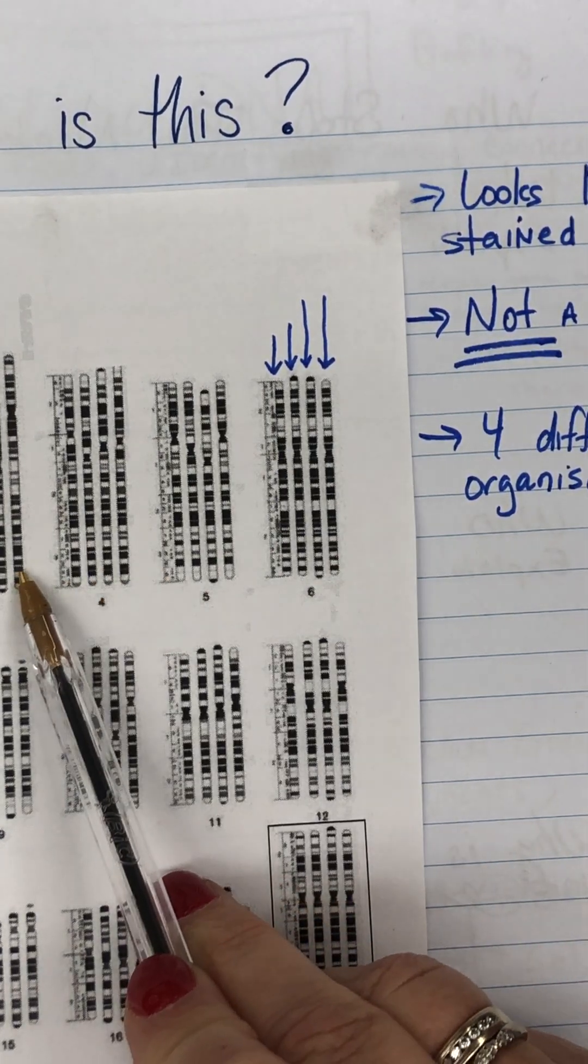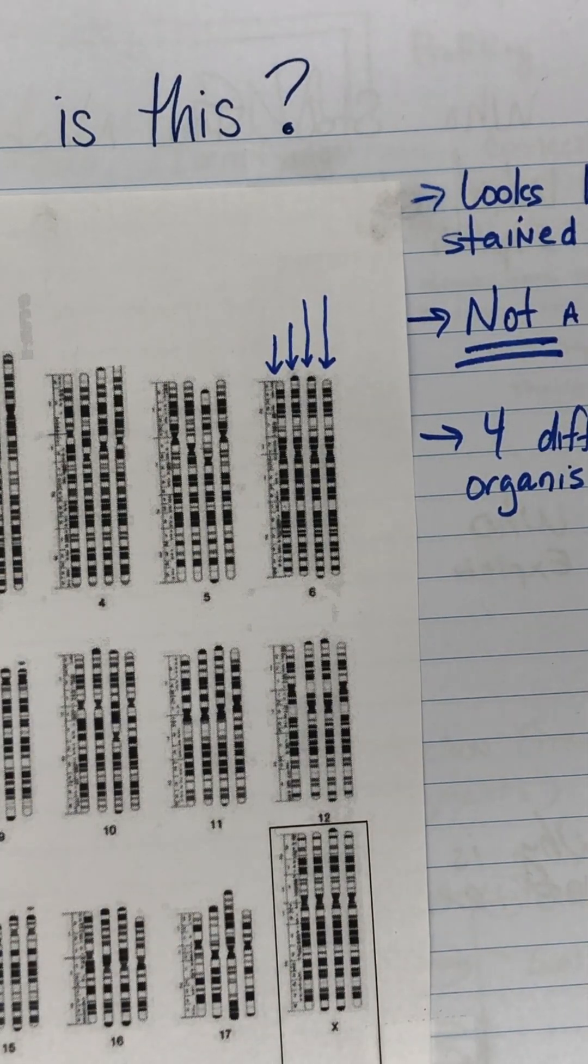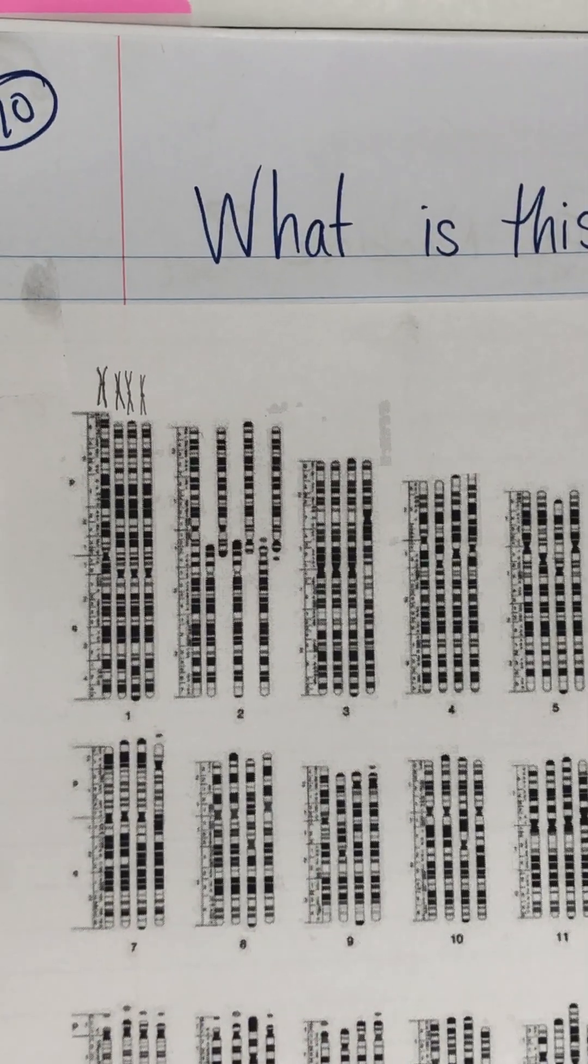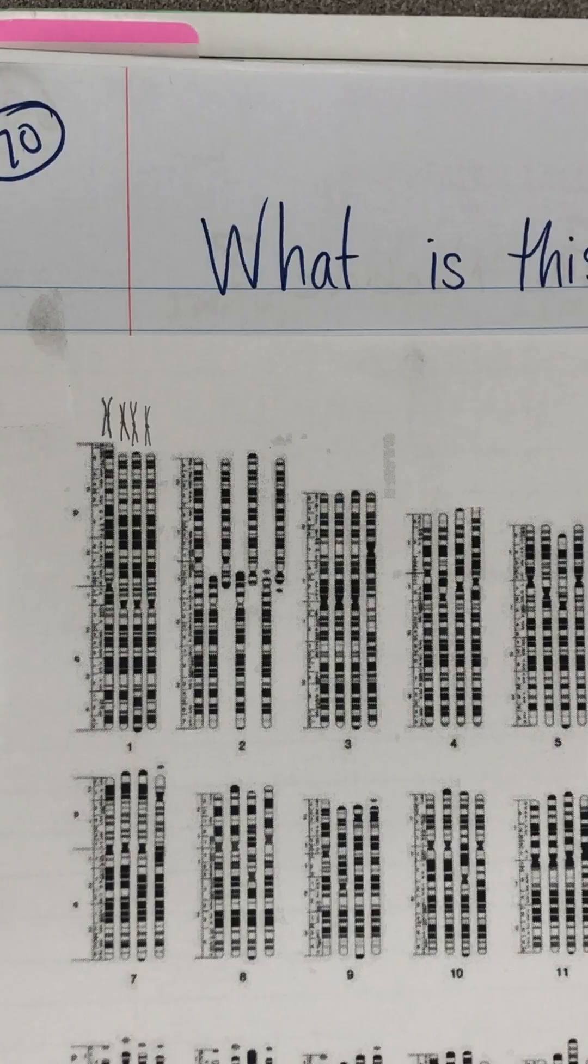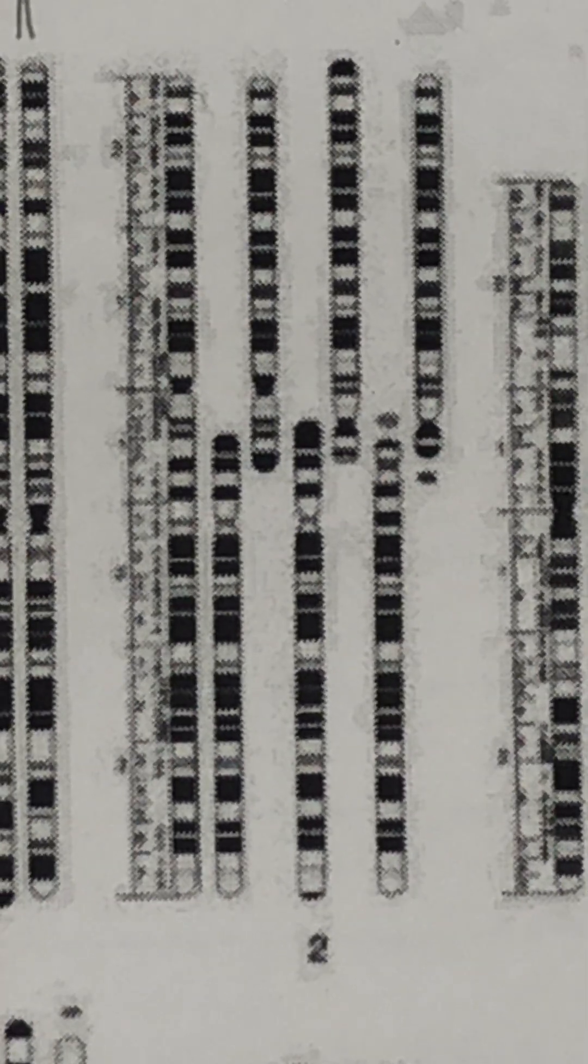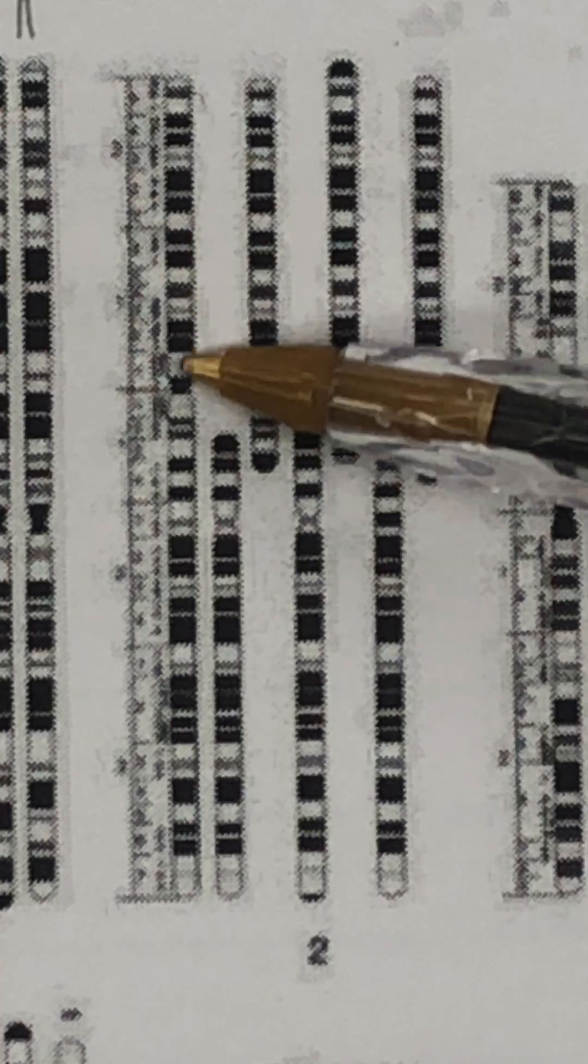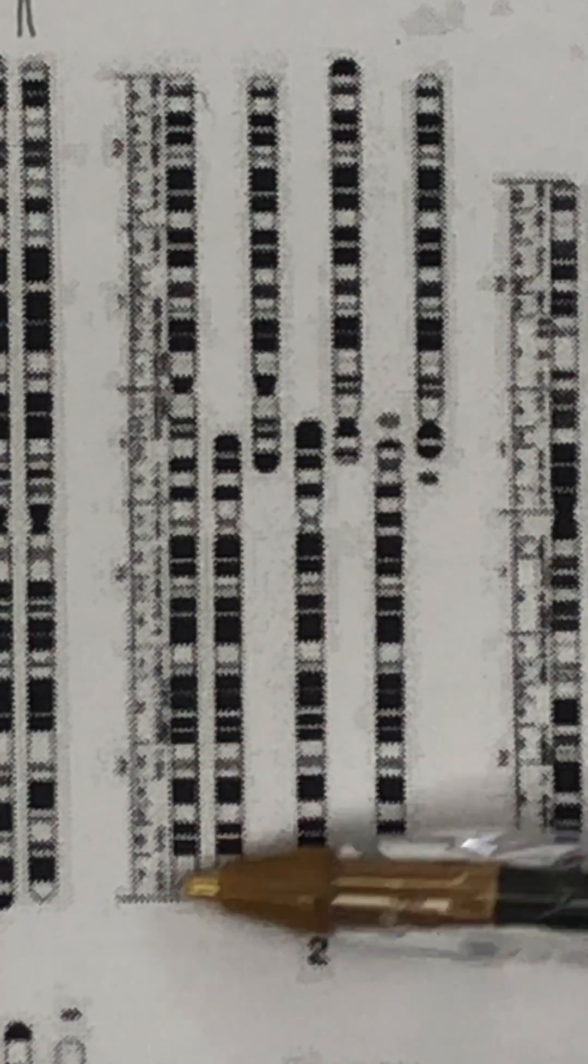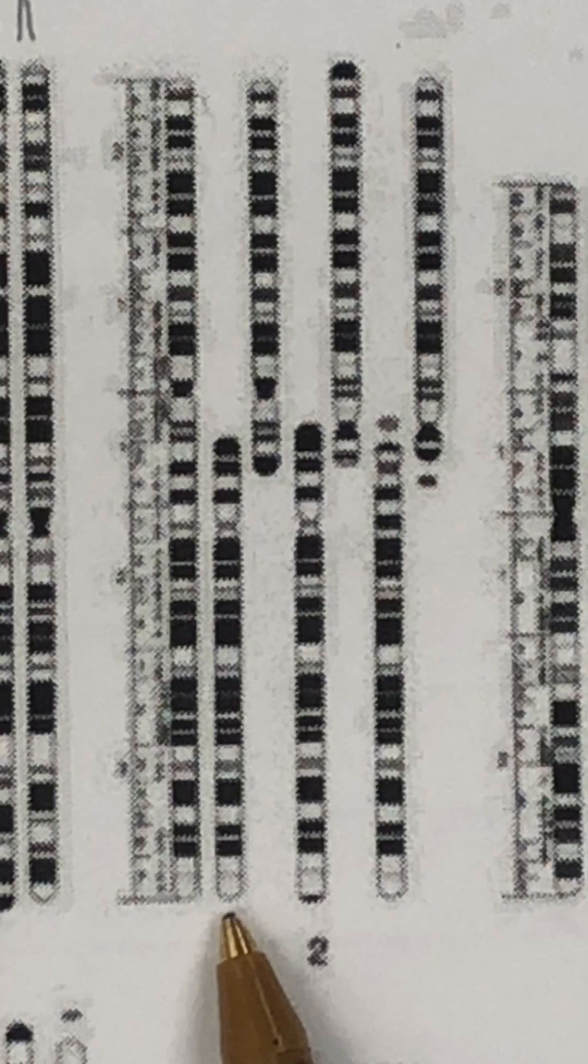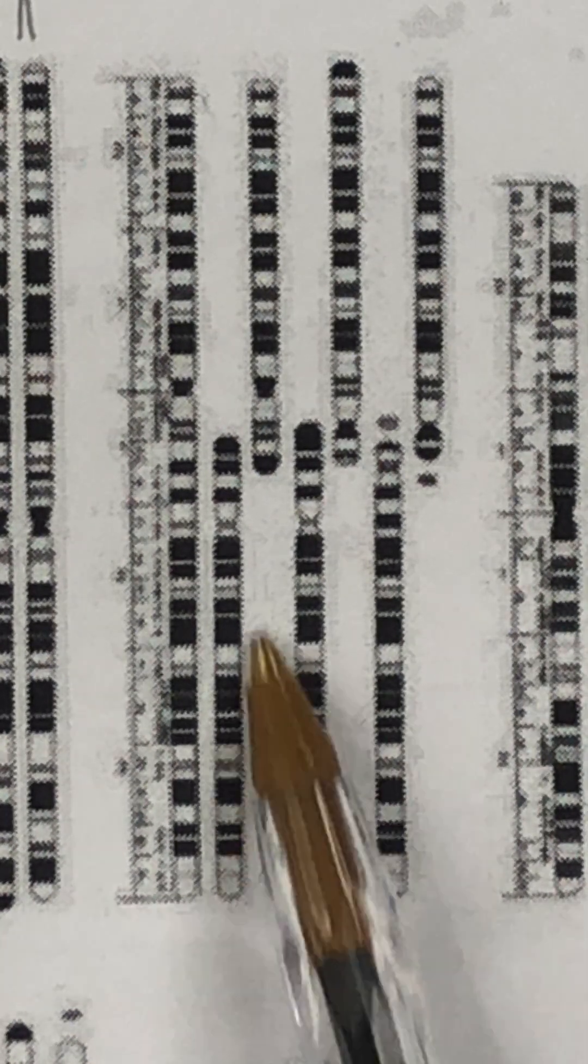But you're going to notice if you look really closely at location number two—let's see if we can zoom in here—I want you to consider what's going on. It looks like the first organism's chromosome is right here and it's intact, and then the second chromosome for the second organism is two pieces.